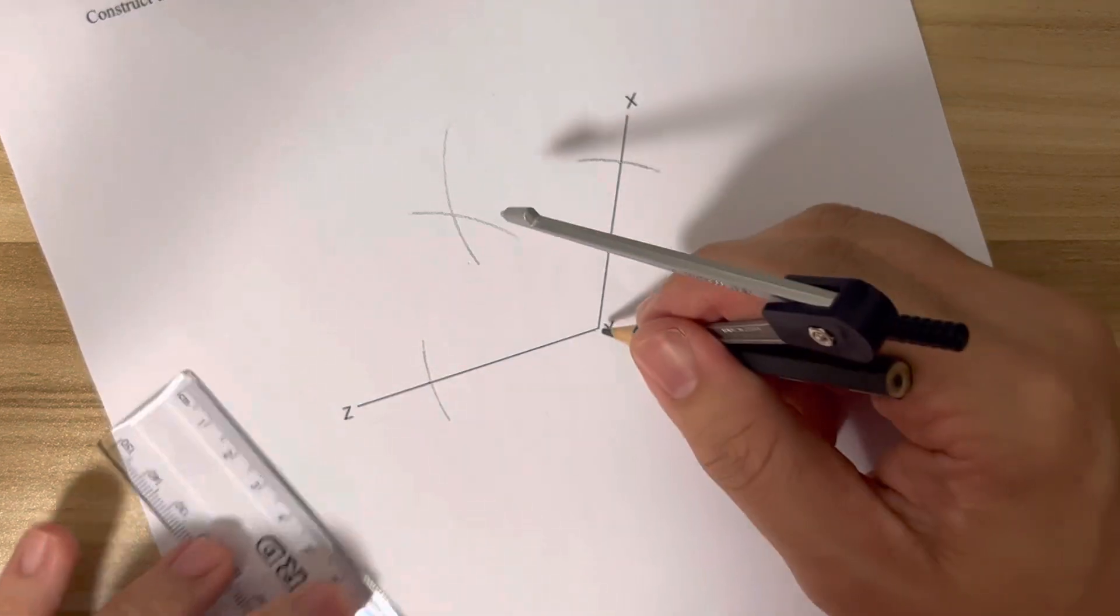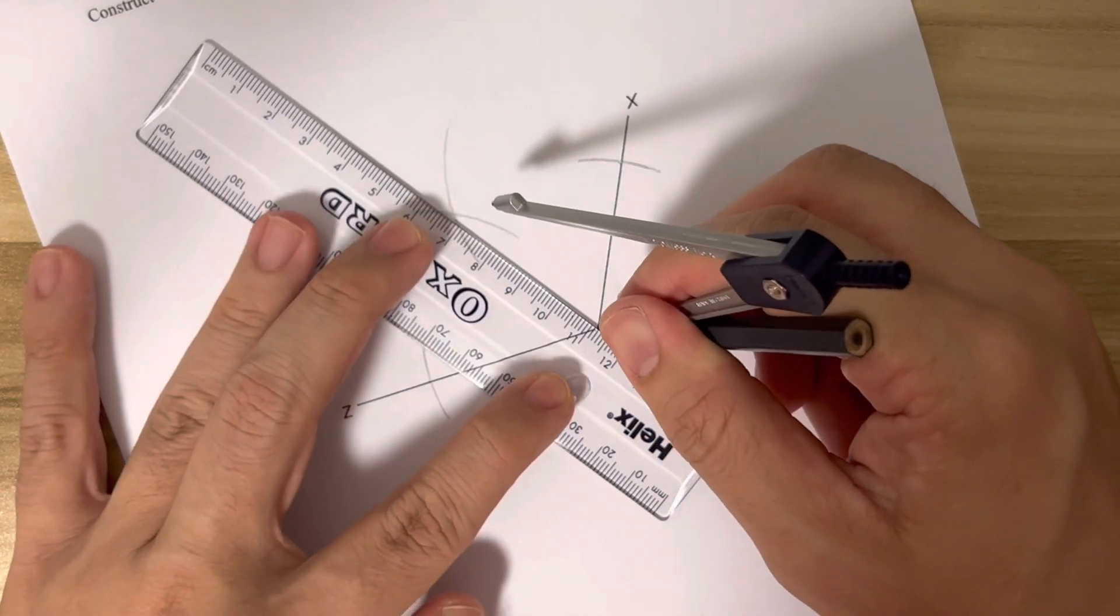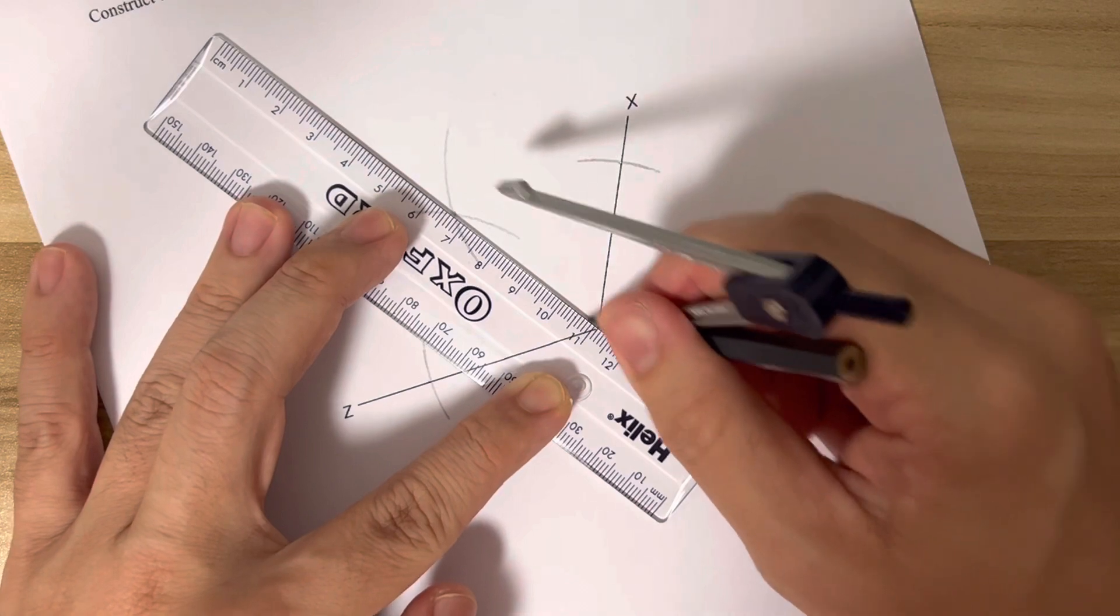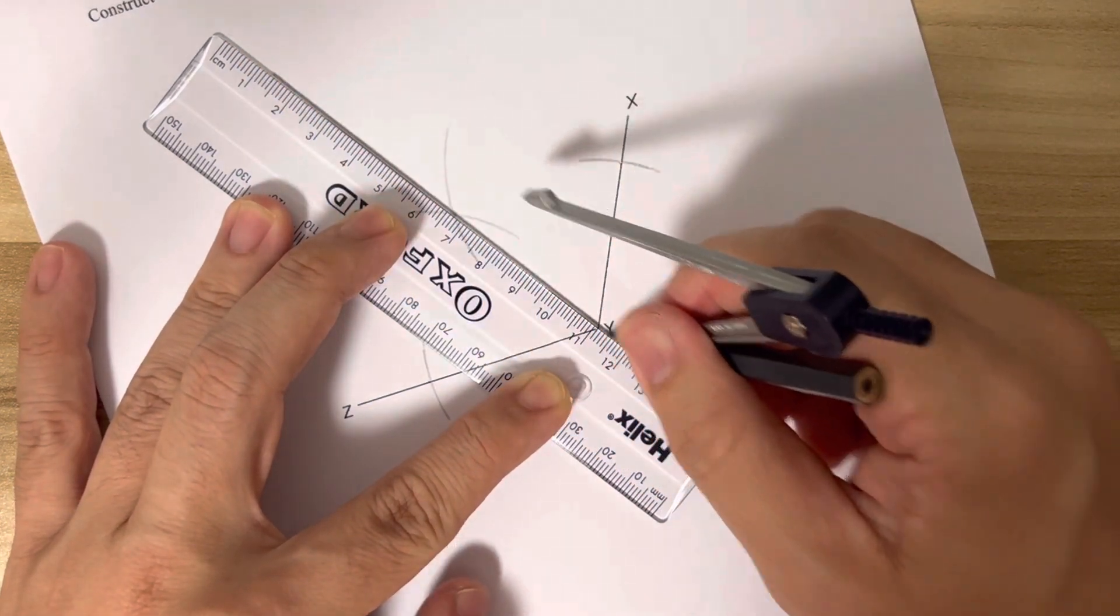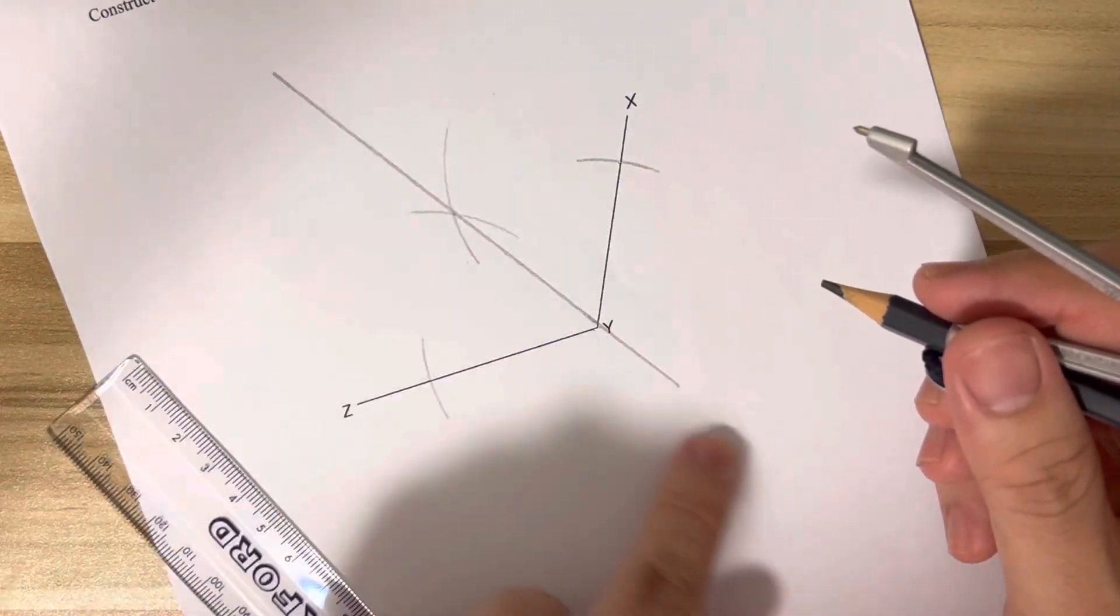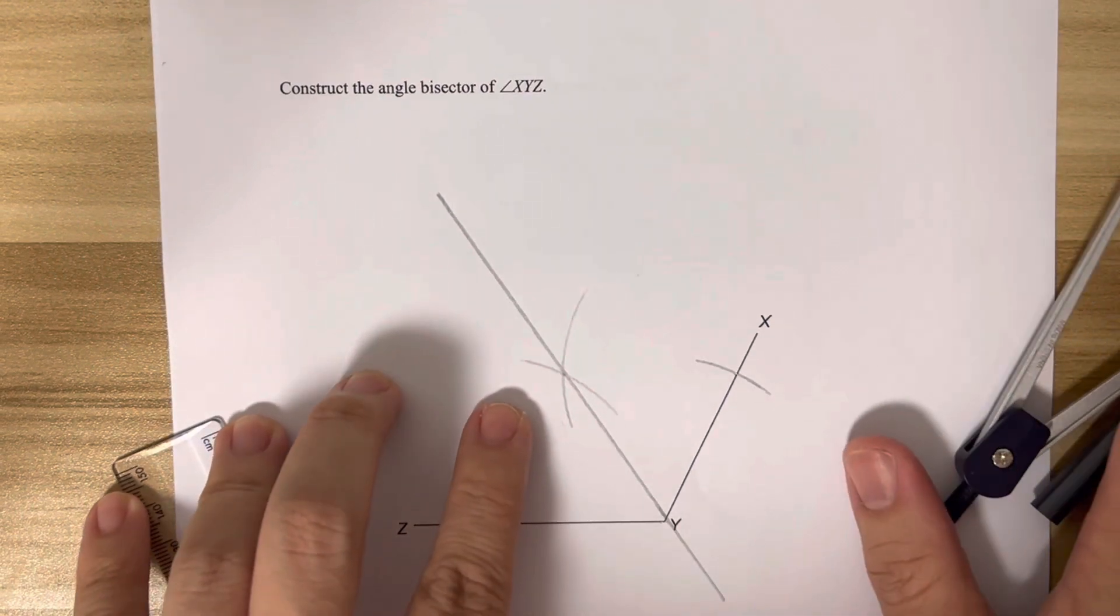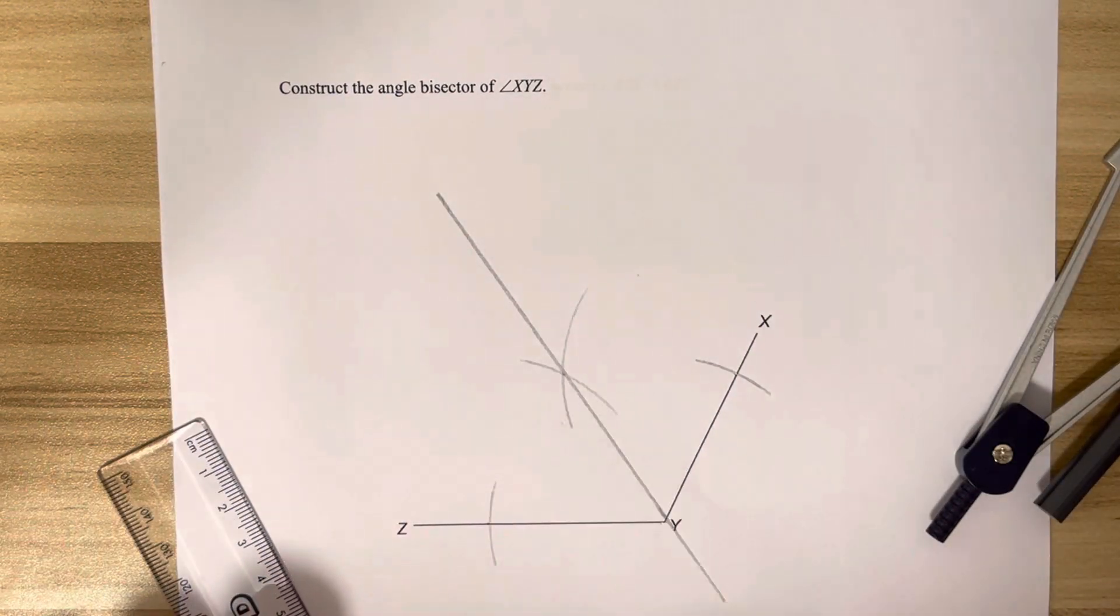Last part would then be to connect the points. This line here will be the angle bisector of angle XYZ. All right.